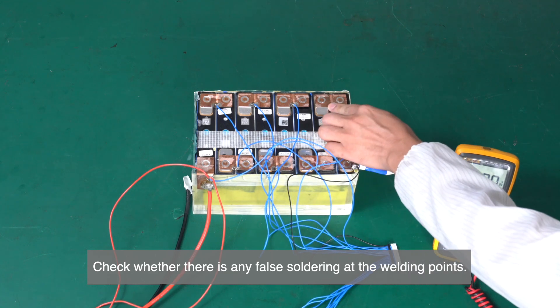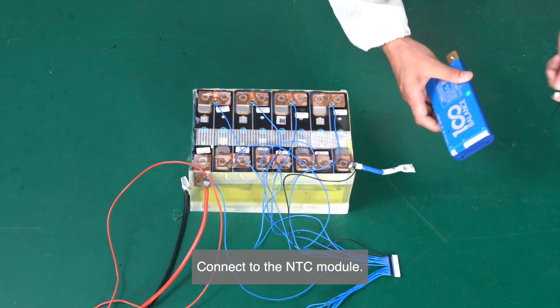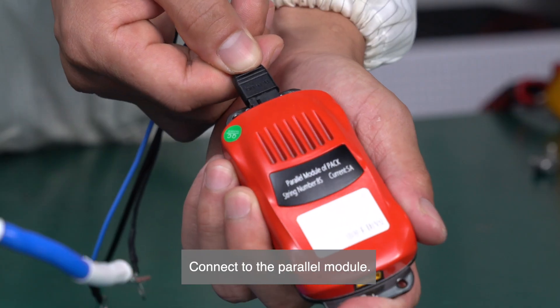Check whether there is any false soldering at the welding points. Check the voltage condition of each string. Connect to the NTC module. Connect to the parallel module.